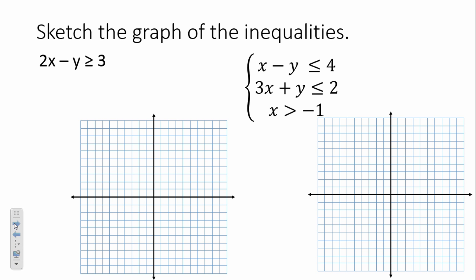Sketch the graph of 2x minus y is greater than or equal to 3. We want to get it into y equals mx plus b form. Taking the 2x to the other side: negative y is greater than or equal to negative 2x plus 3. When I divide by negative 1, I flip the inequality: y is less than or equal to positive 2x minus 3.